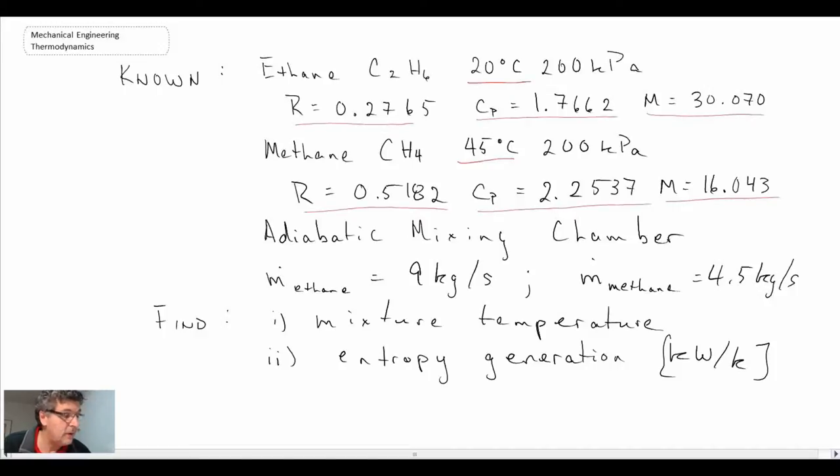So what we're going to do is begin. I'll write out a schematic of what this problem might look like. It's basically quite simple - it's just a mixing chamber. We have a mass flow rate of ethane coming in, mass flow rate of methane, and then leaving we have the mass flow rate of our mixture.